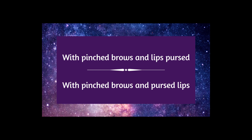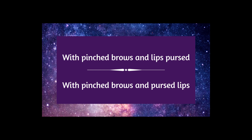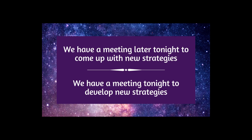Then I had written 'with pinched brows and lips pursed' and realized it was inconsistent — verb before noun, then noun before verb. I changed it to 'with pinched brows and pursed lips' for consistency. Next example: 'We have a meeting later tonight to come up with new strategies' sounded super wordy, so I changed it to 'We have a meeting tonight to develop new strategies.' That's using a stronger verb and cutting redundant words like 'come up with.'